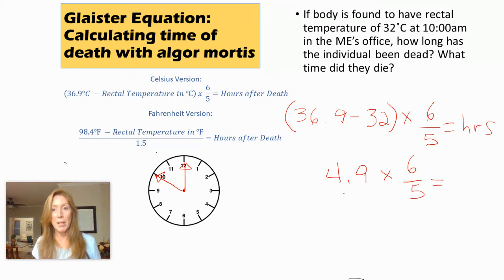So now we're just going to multiply across. So we'll put 4.9 over 1, and so 4.9 times 6. 4.9 times 6 is 29.4.